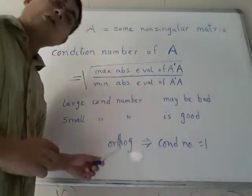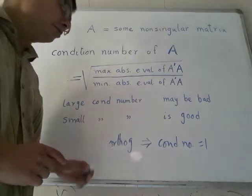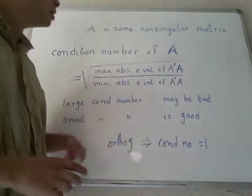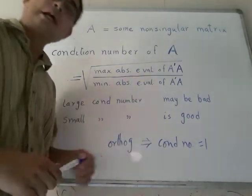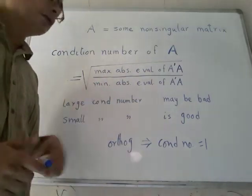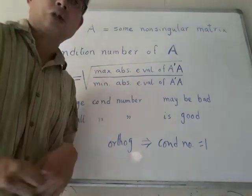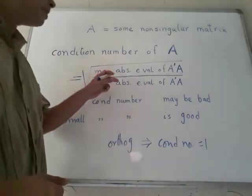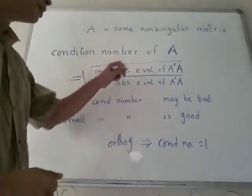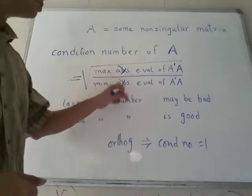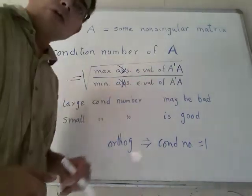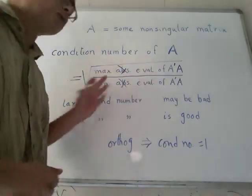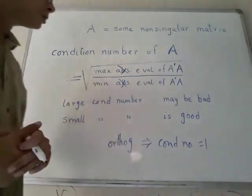In particular, if you are working with orthogonal matrices, then the condition number has to be 1 because A transpose A is just the identity matrix. So both the numerator and the denominator are just equal to 1. And in fact, though I have written maximum absolute eigenvalue, I really do not need that absolute term because it is A transpose A, which is a positive definite matrix. So these will always be positive numbers.